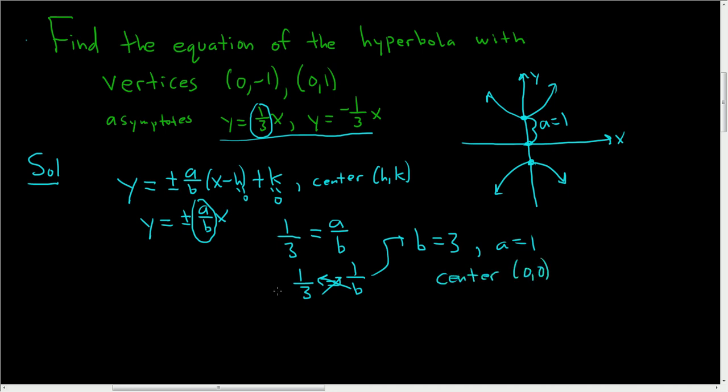So we can go ahead and write the equation down for the hyperbola. So the formula for a hyperbola that opens up and down is y minus k quantity squared over a squared minus x minus h quantity squared over b squared equals 1.